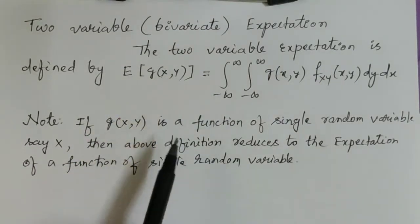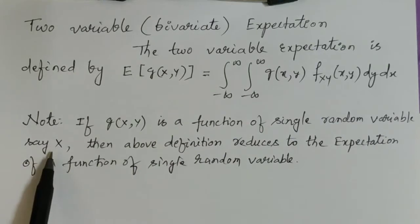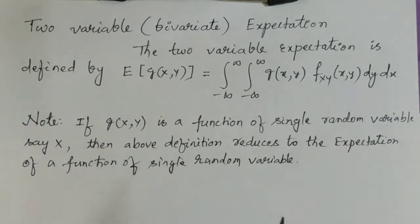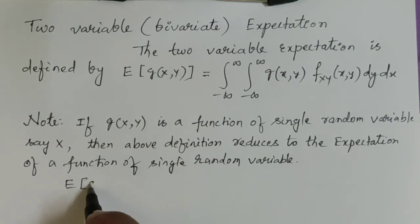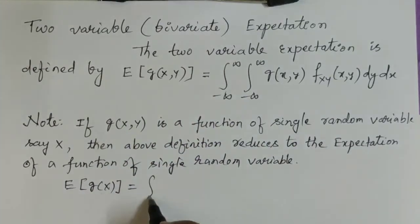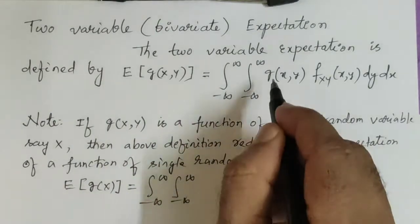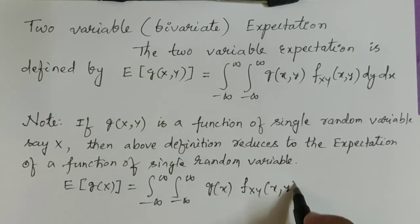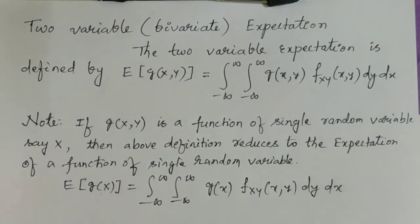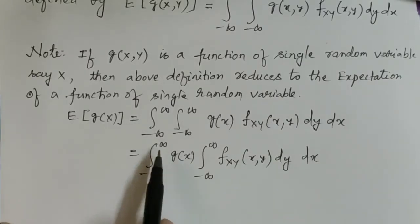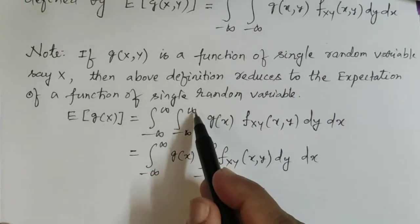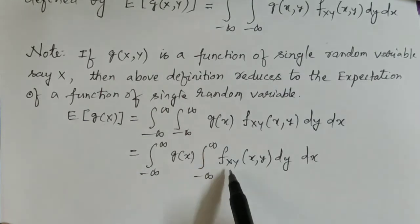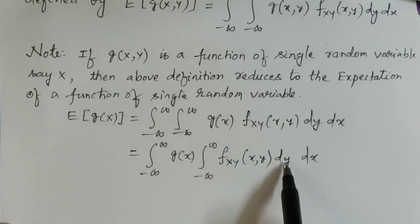Note that if the function g(x, y) is a function of a single random variable, say x, then this definition reduces to the expectation of a single random variable. That is, E[g(x)] equals the double integral of g(x) times f_{XY}(x, y) dy dx. Taking g(x) outside the inner integral, we get the integral of g(x) times the integral of f_{XY}(x, y) dy dx. We know that the integral from minus infinity to plus infinity of f_{XY}(x, y) dy is f_X(x).